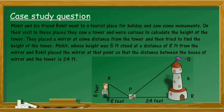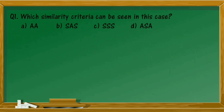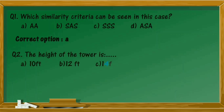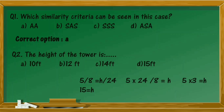Question 1: Which similarity criteria can be seen in this case? From the figure, the correct option is option A — AA similarity criteria. Question 2: What is the height of the tower? Since the triangles are similar, corresponding sides are proportional: 5/8 equals H/24. Cross-multiplying, the value of H is 15 feet. The correct option is option D.